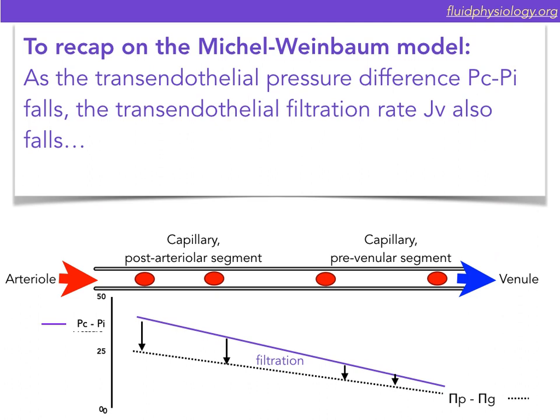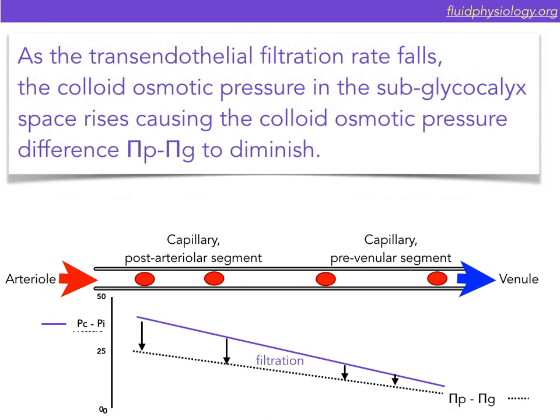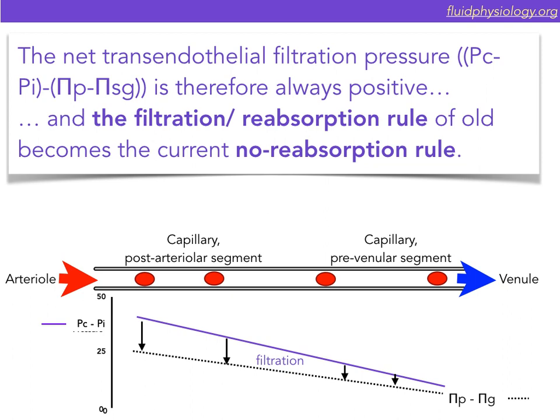Time to do a recap on the Michel-Weinbaum model. As the transendothelial pressure difference falls, the transendothelial filtration rate also falls. As the transendothelial filtration rate falls, the colloid osmotic pressure in the sub-glycocalyx space rises, causing the colloid osmotic pressure difference to diminish. The net transendothelial filtration pressure is therefore always positive. The filtration-reabsorption rule of yesterday becomes today's no-reabsorption rule.